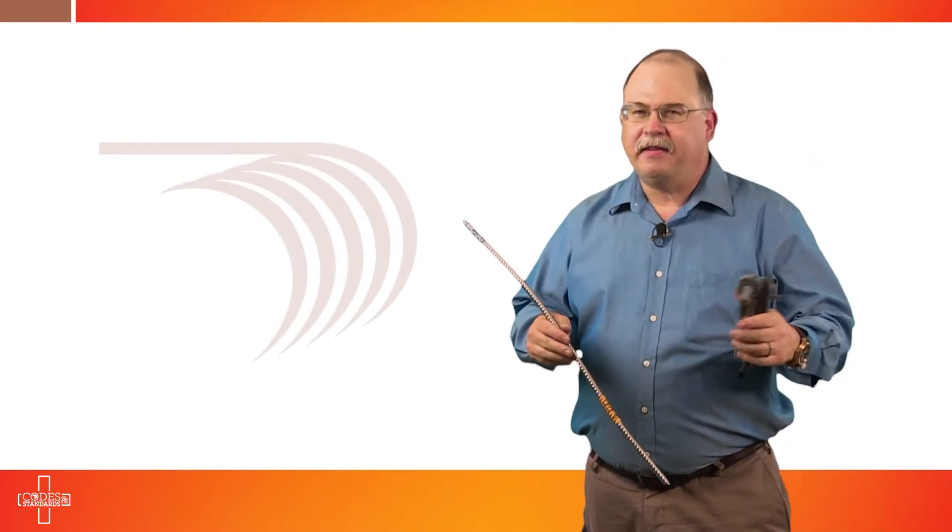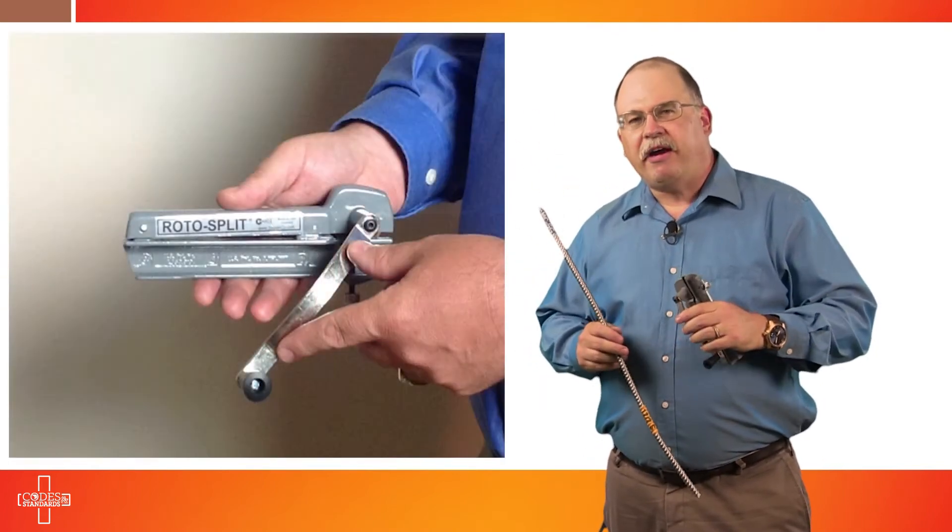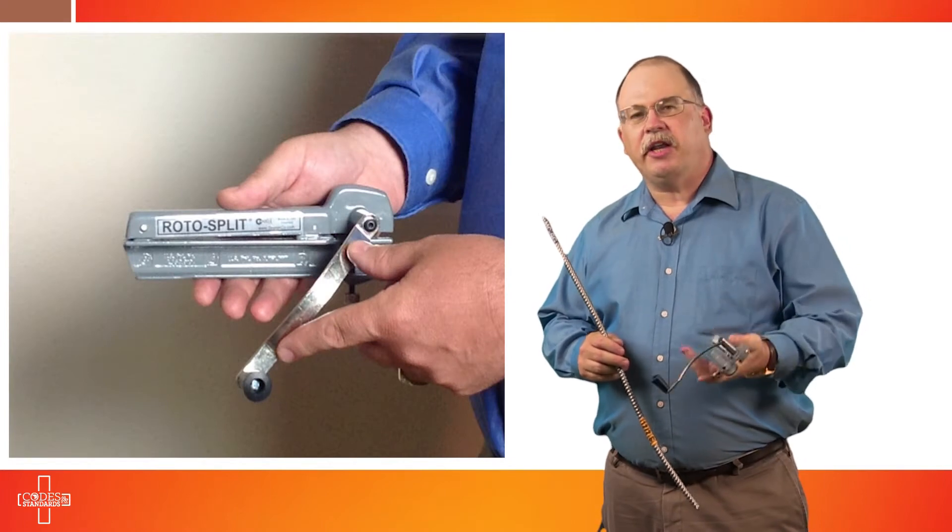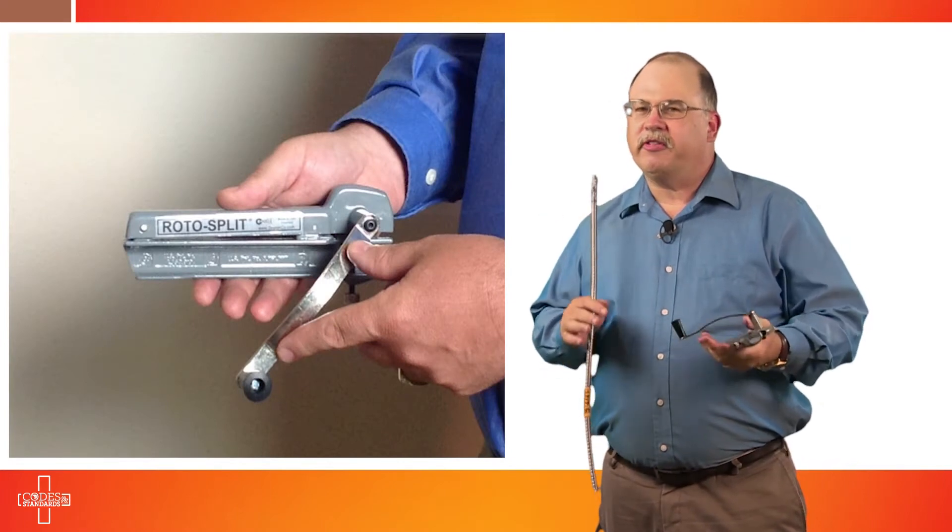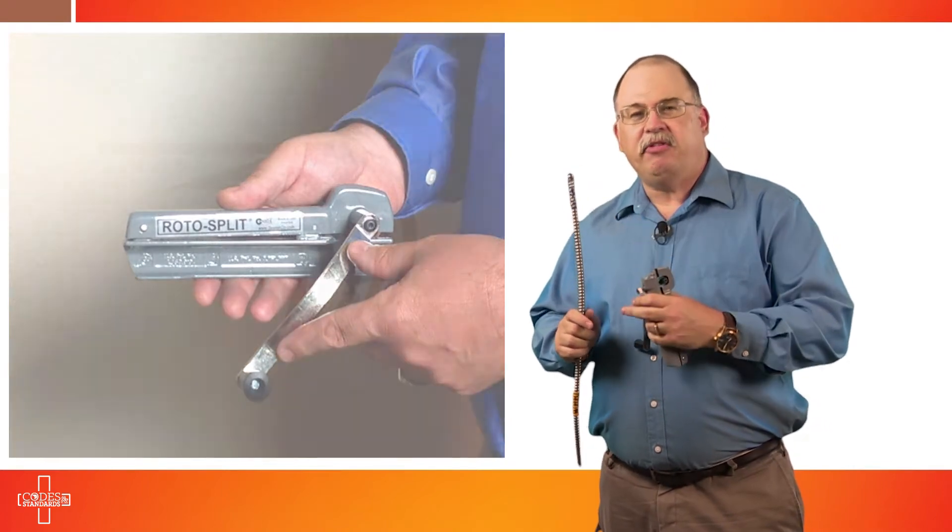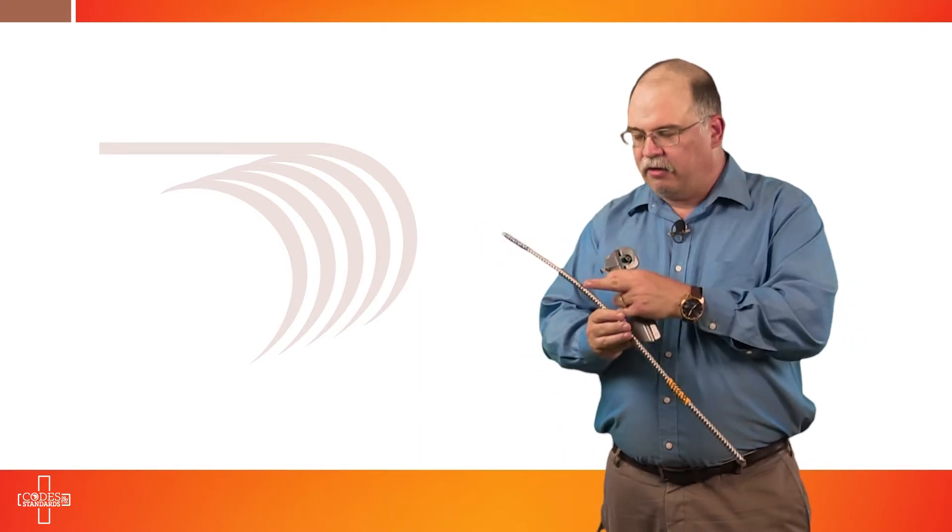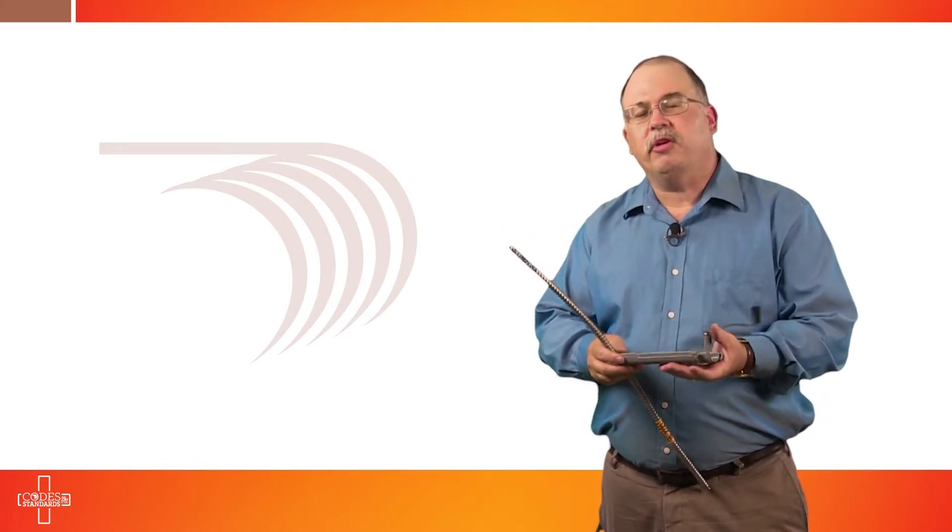When cutting Type MC cable or Type AC cable, it's important to select the proper tool for the job. We recommend Rotosplit cutting tools. These tools are designed to cut through the metallic sheathing and not damage the interior conductors, and they're very simple to use. There are other methods to cut the outside metallic sheathing under controlled supervision, like with hacksaws or other rotary tools. We just happen to recommend this one because we've used it quite a bit and it's a reliable cutting tool.